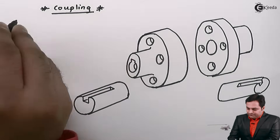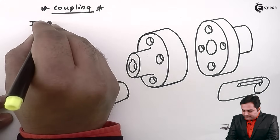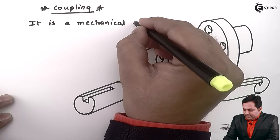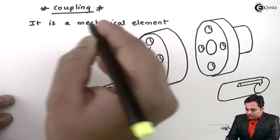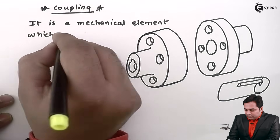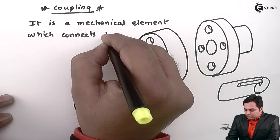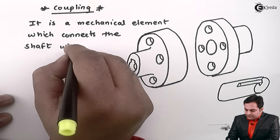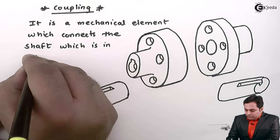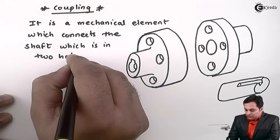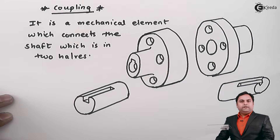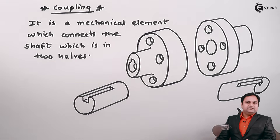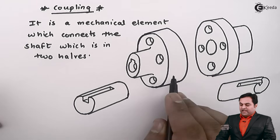Coupling is a mechanical element which connects the shaft which is in two halves. Here is the definition: coupling is a mechanical element which connects the shaft which is in two halves.